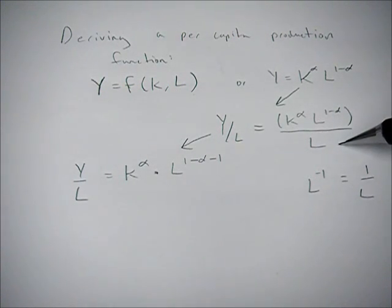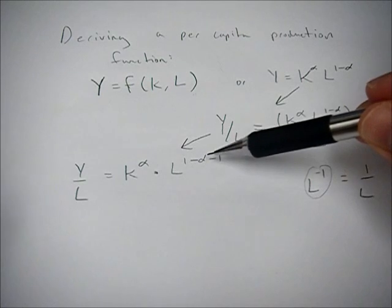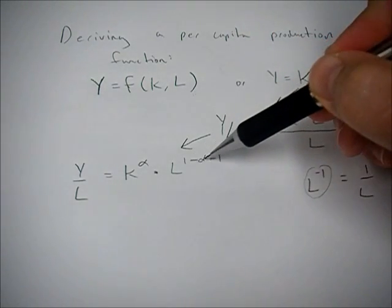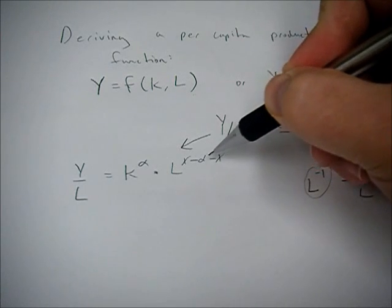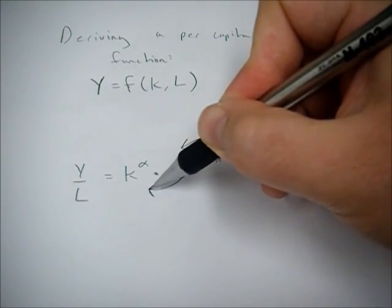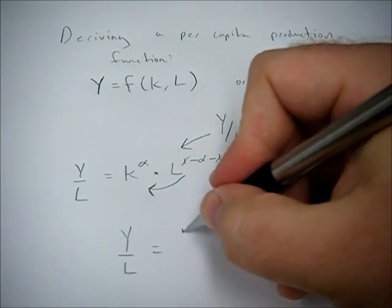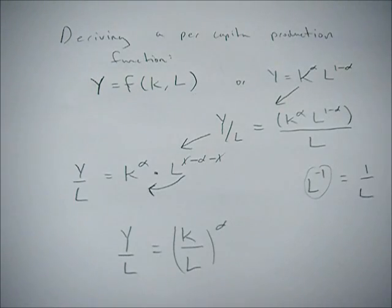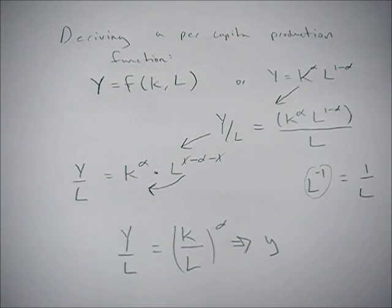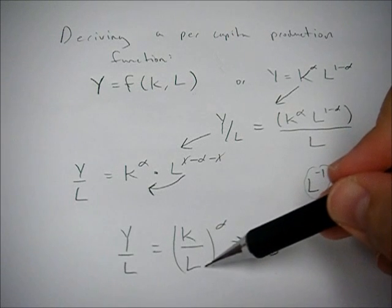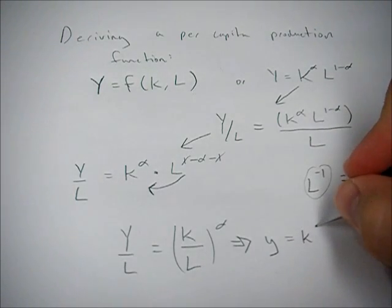We've taken the l from the denominator and substituted l to the minus 1, multiplied it in. With exponents, when you multiply you just add or subtract the exponents. So we have 1 minus alpha minus 1 — the 1's cancel — leaving negative alpha. Since this exponent is negative alpha, we can move it to the denominator and change the sign. So we end up with y over l equals k over l to the alpha. This can be written in intensive form: y over l is little y — per capita y — and k over l is little k — per capita capital. Then we attach alpha as the exponent.